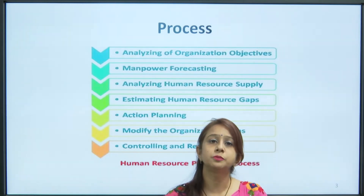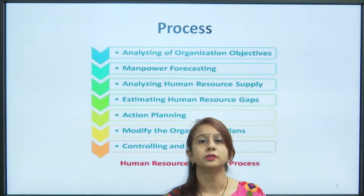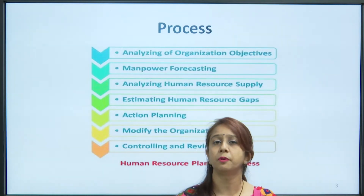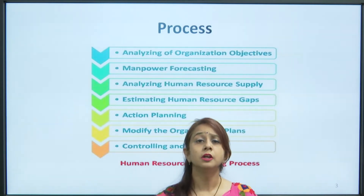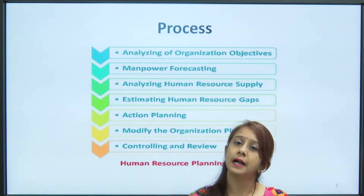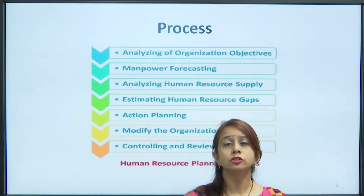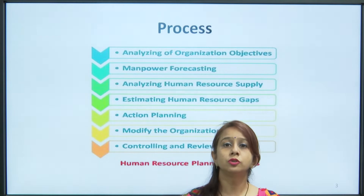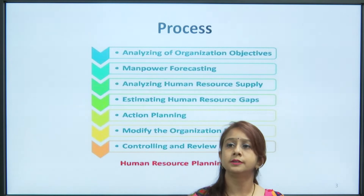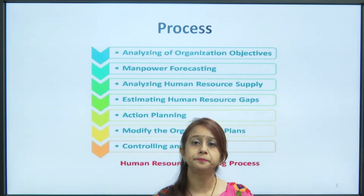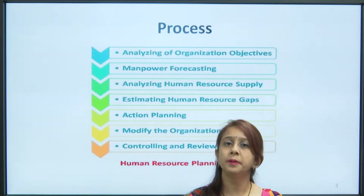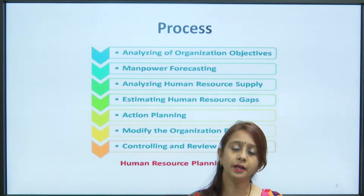The last step is controlling and reviewing the process. Controlling means evaluation of everything that has been done. Once the human resource planning process completes, we need to evaluate it to analyze all kinds of problems, gaps, and rectifications needed, so that the next time this process is repeated it will be improved.